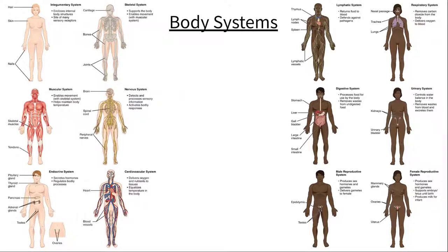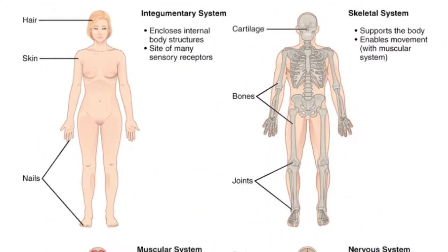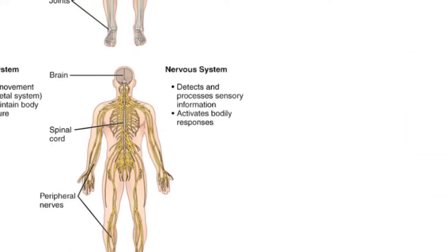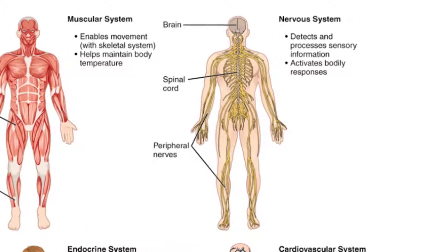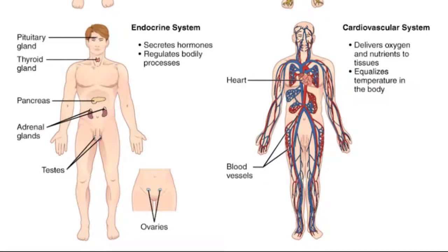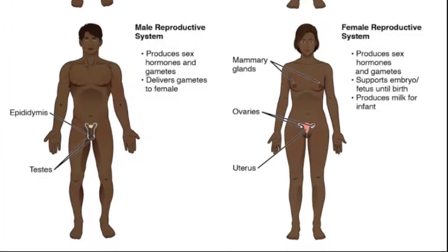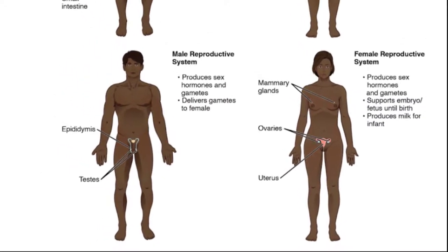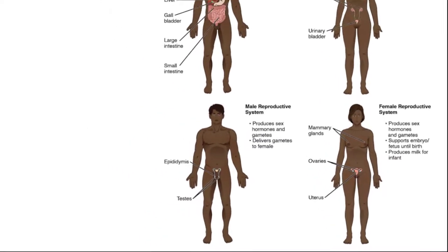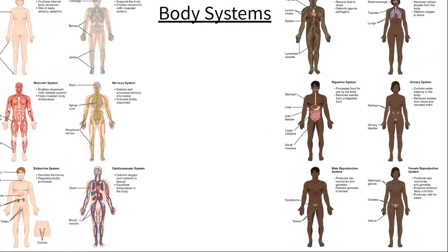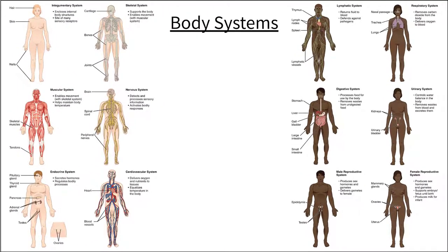From top to bottom and left to right, we have the integumentary system, the skeletal system, lymphatic system, respiratory system, muscular system, nervous system, digestive system, urinary system, endocrine system, cardiovascular system, and the male and female reproductive systems. All of these systems work together to complete the actions necessary to sustain the workings of the body and keep us alive. Take a look at the images and read the bullet points to get an idea of the structures and functions of each one.